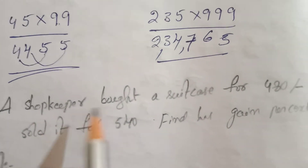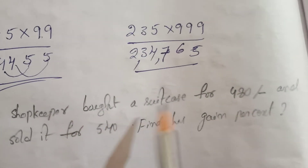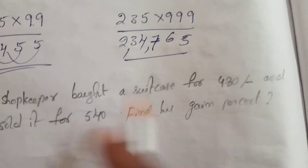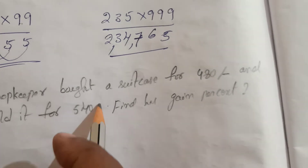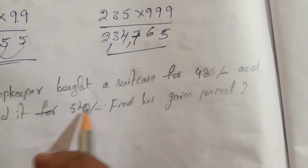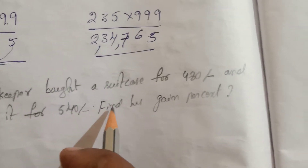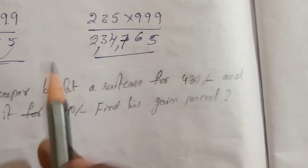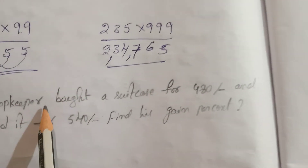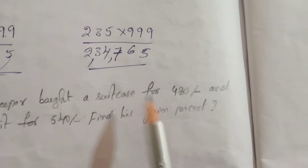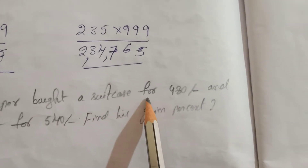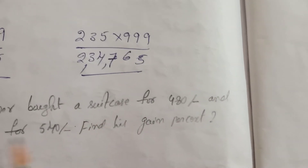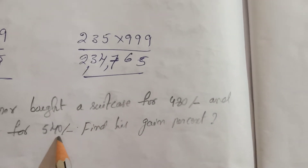The shopkeeper bought his suitcase for 480 rupees and sold it for 540 rupees. Find his gain percent.